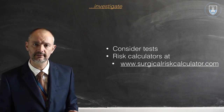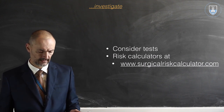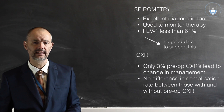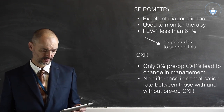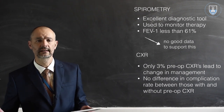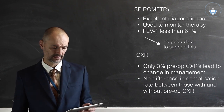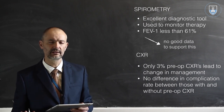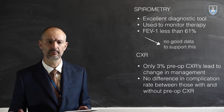We'll consider two tests — and in part two we'll look at the risk calculators. The two tests are spirometry and chest X-ray. Spirometry is an excellent diagnostic tool for many lung conditions and is very useful for monitoring therapy, but it's not really a good predictor of post-operative outcome. There is some sparse evidence suggesting that an FEV1 of less than 61% may indicate increased risk, but the evidence is not strong.